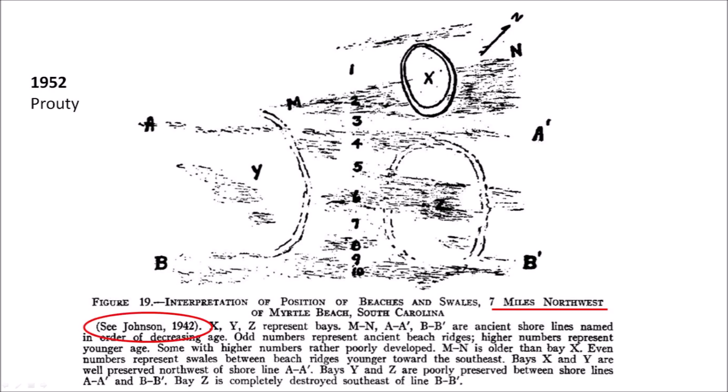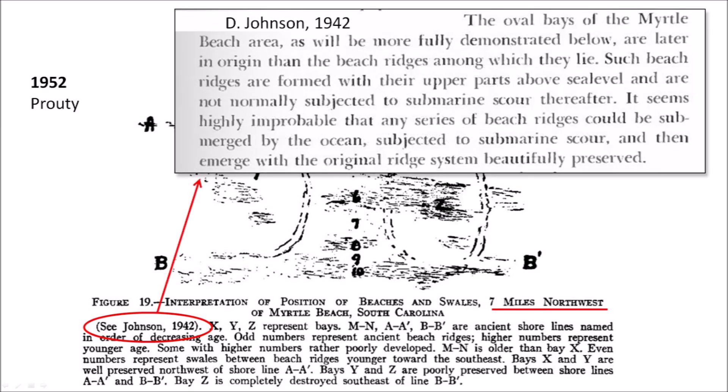Prouty was an advocate of the impact origin of Carolina Bays, but he referenced Professor Douglas Johnson, who proposed that the bays originated from Artesian Springs modified by wind and wave action. Professor Douglas Johnson was not convinced that the Carolina Bays could withstand the wave action of the sea.